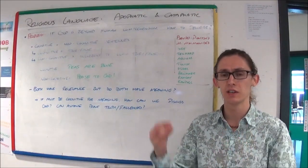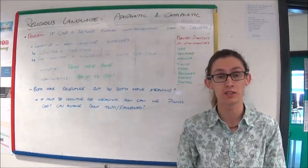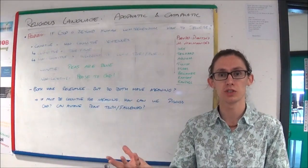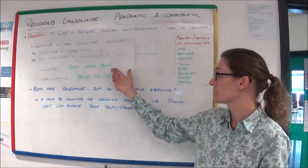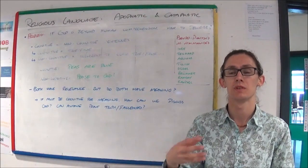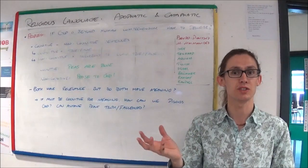The via negativa, the via positiva, otherwise known as the apophatic and cataphatic ways, attempt to find a way of discussing God in a cognitive, meaningful way, in a way that can be proven, but in a way that doesn't commit blasphemy.